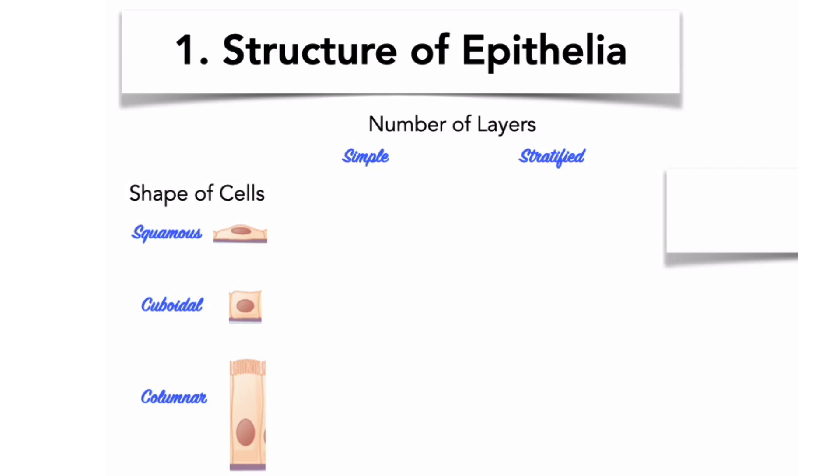Thus, the name of a simple epithelium is called simple plus the name of the shape of the cells that make up the epithelium. We have, then, simple squamous epithelia, simple cuboidal epithelia, and simple columnar epithelia.